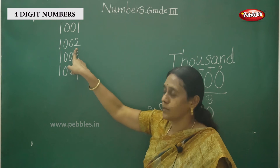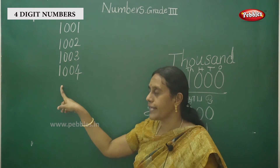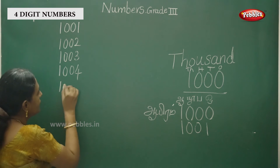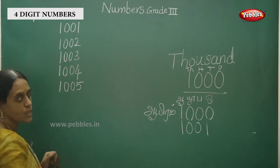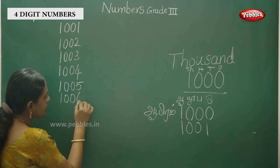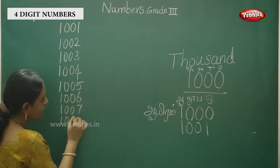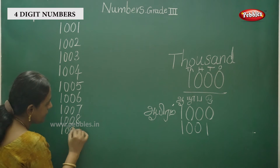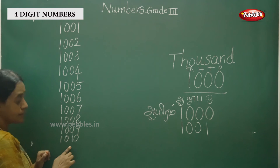So 1, 2 — now you write it. 1, 3 — then 1, 4. Next, 1, 0, 5. This one is 1005. And 1006, 1007, 1008, 1009. And 1010 — observe it: 100 and 10.